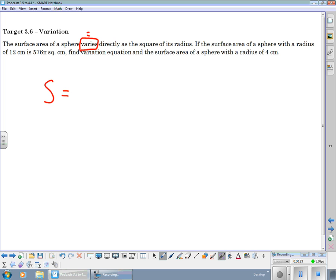Varies. Now directly means, we talked about how directly is on the top. Indirectly goes on the down here. We've got this constant k out in the front, or in the back. So directly, it's the square of its radius. It's the square of its radius times k.